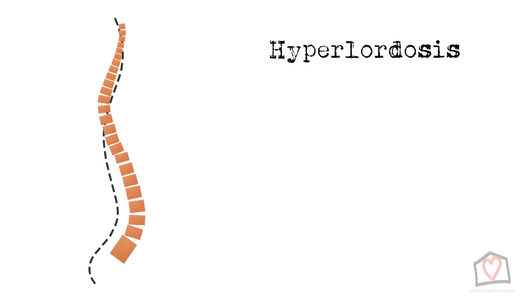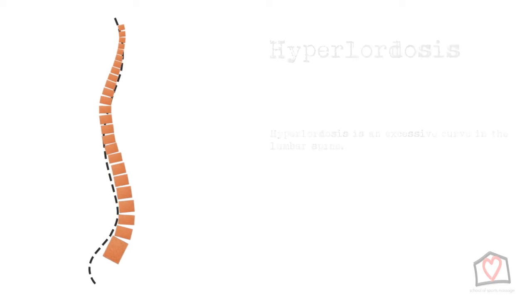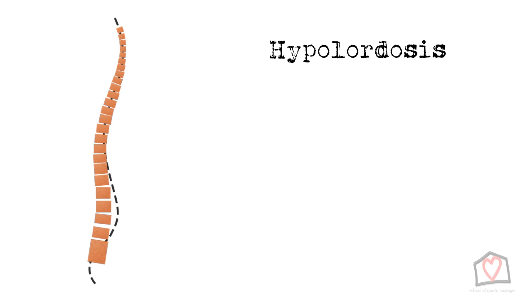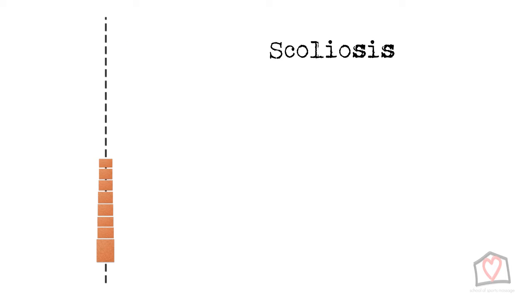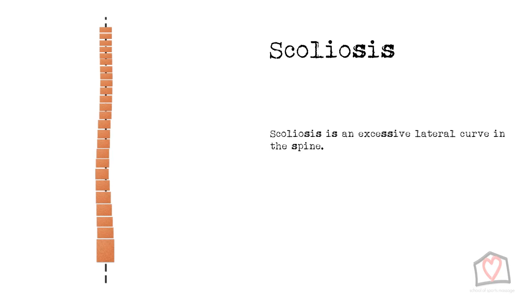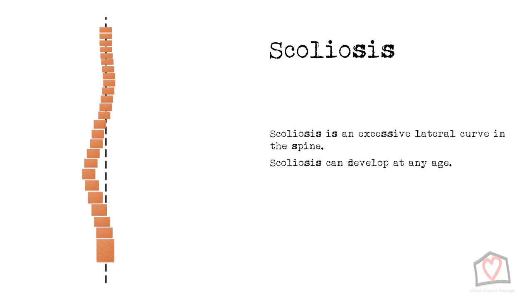Next up you have hyperlordosis — here you have an excessive curvature in the lumbar spine. The final spinal deviation is scoliosis. This is where the spine has an excessive lateral curve. This can develop at any age, so you can be born with it or it can develop. For example, having children and then carrying them on one hip repeatedly will cause a scoliosis.